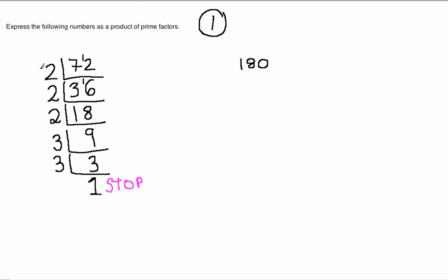These are all the factors that divide into the number 72. So together these numbers create the number 72 when they are multiplied together. So your final answer here is 2 times 2 times 2 times 3 times 3.